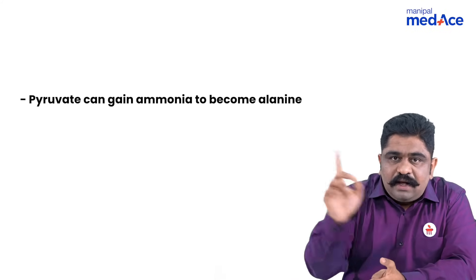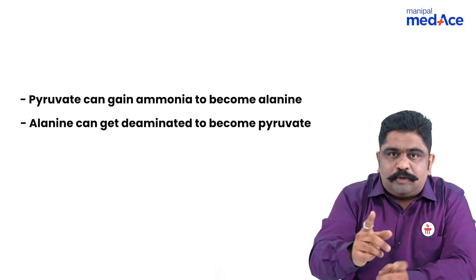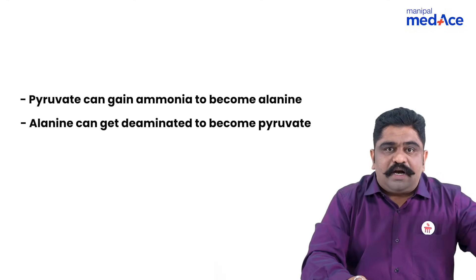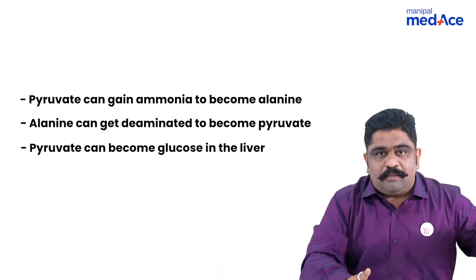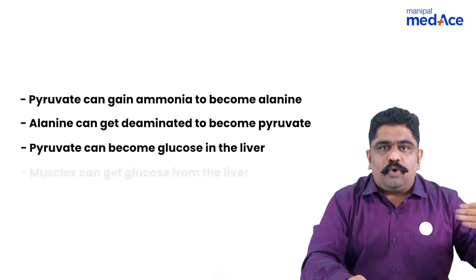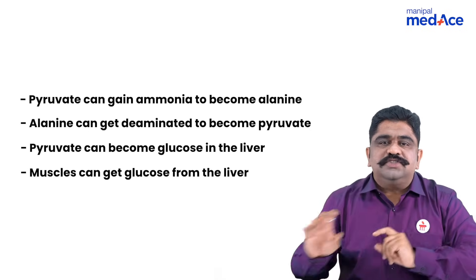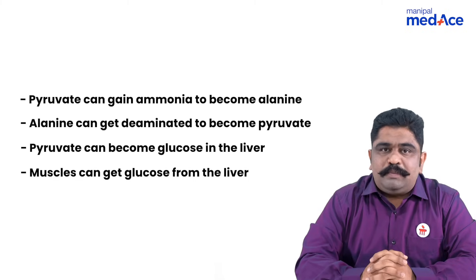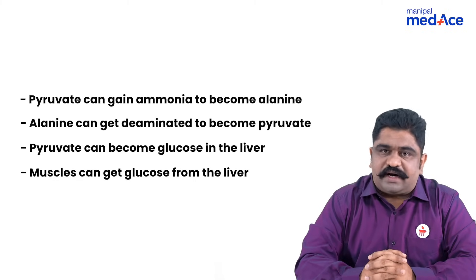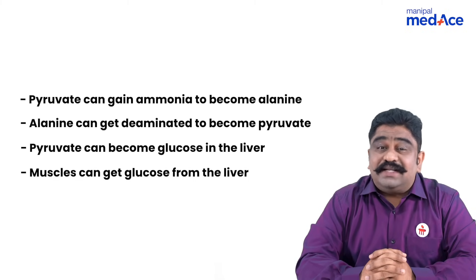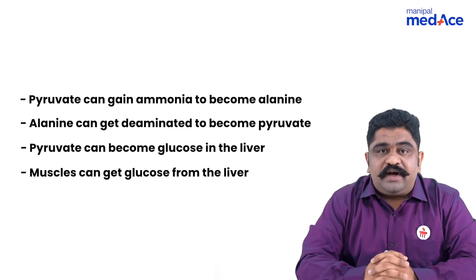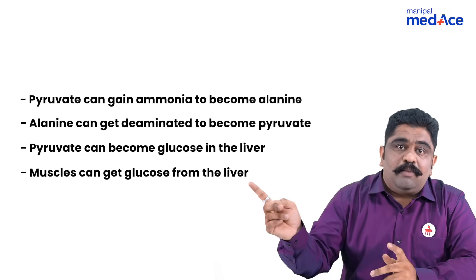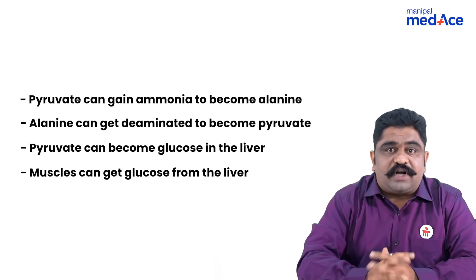So, what is exactly happening? Muscles are liberating alanine. Alanine goes into the blood and from the blood into the liver. In the liver, alanine is capable of becoming pyruvate to become glucose. Glucose is entering into the muscle. So, muscles will be given glucose for proper contractile function. At the same time, the muscles will be cleared of toxic ammonia whenever wear and tear of muscles happens, by removing the ammonia in the form of trapped alanine.